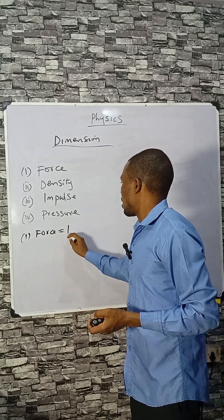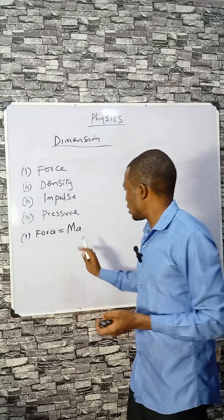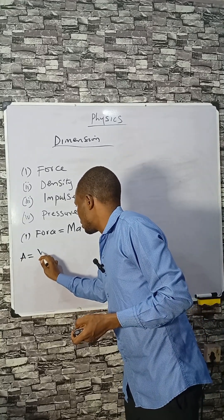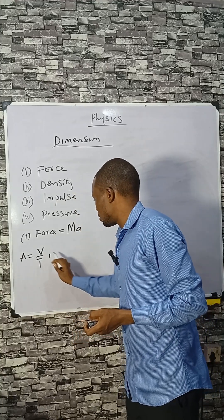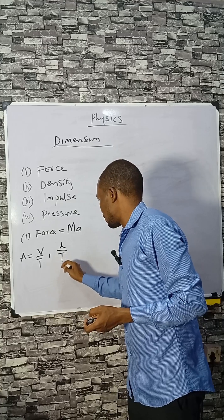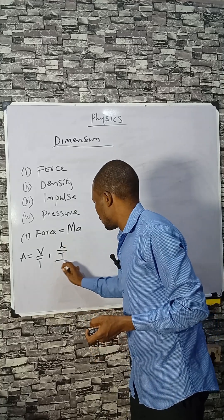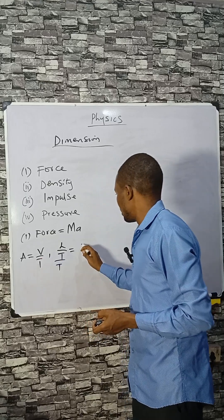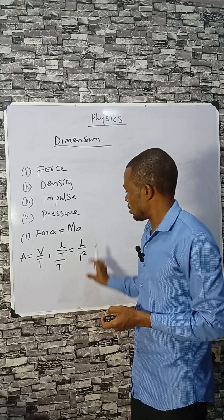Force is a product of mass and acceleration, ma. Now let's find acceleration. The relation is velocity divided by time, and velocity is displacement — which is length — divided by time. So acceleration is L divided by T squared.